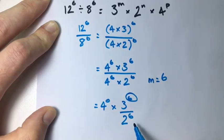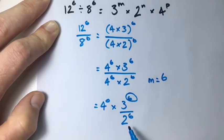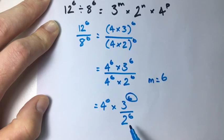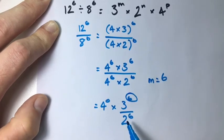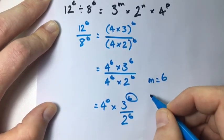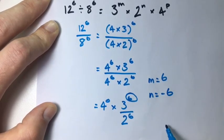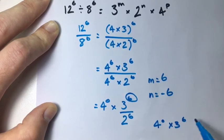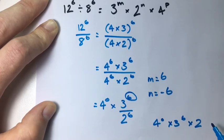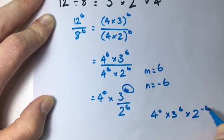What about my 2? So we have 2 here, but it's on the bottom of our fraction. Because it's on the bottom, we know it's going to be negative 6. Because if we write this out again, we can say 4 to the 0 times 3 to the 6 times 2 to the negative 6.